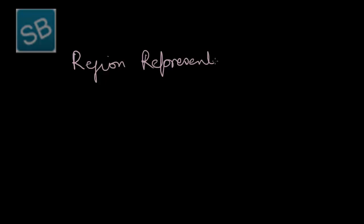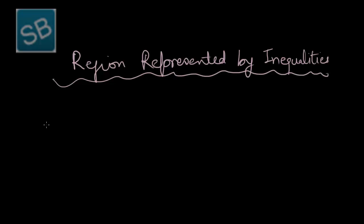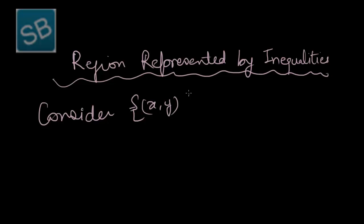The next topic is region represented by inequalities. Consider the ordered pair x comma y such that y is lying between 0 and x squared, that is 0 less than equal to y, y less than equal to x squared.